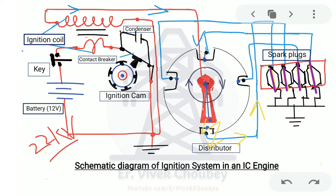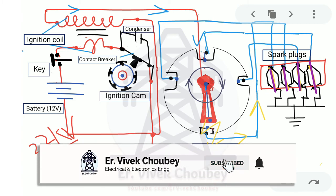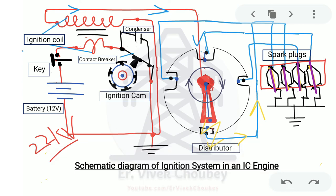This is the basic diagram of the ignition system of an IC engine. The distributor takes care of timing, which is important because not all cylinders require sparking at the same time. Sparking is required after the compression cycle is completed — the air-fuel mixture must be compressed to higher pressure and higher temperature first. Only after that, during the combustion cycle, is sparking required. If sparking is not done at the appropriate time, the IC engine will not work.